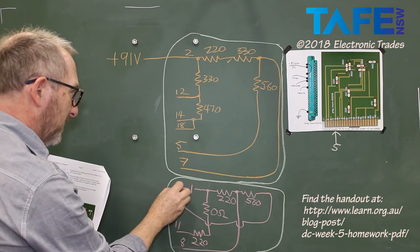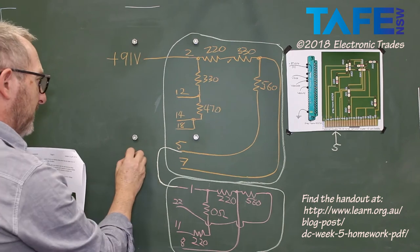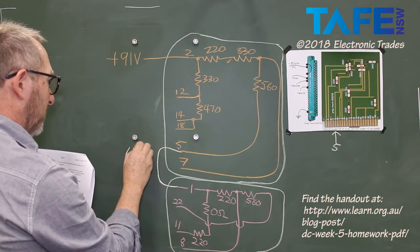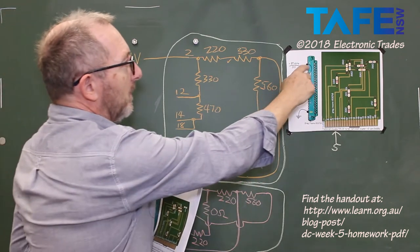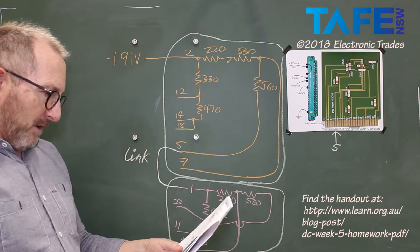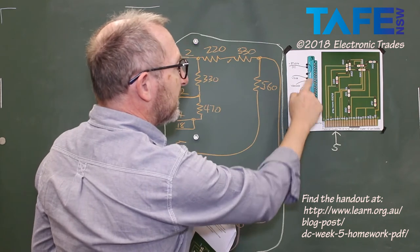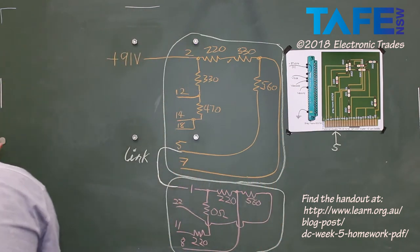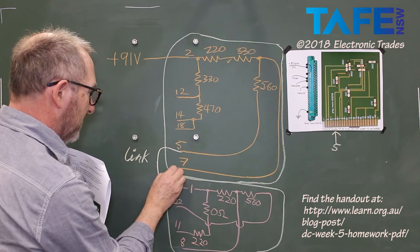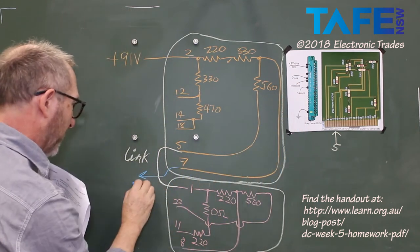So pin number 1 is connected up into pin number 5. And this is a link, an external link, on our socket system. Alright, so first output is V-bias comes out of pin number 7. Pin number 7. Let's use a nice dark blue colour for that. Pin number 7 comes out and that's called V-bias.